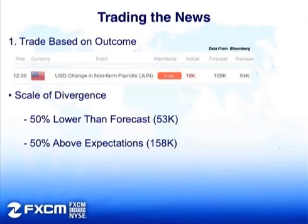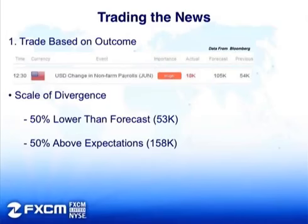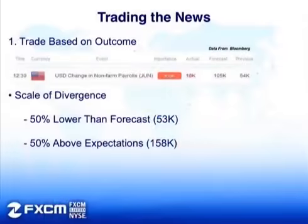Coming back to the non-farm payrolls example for the month of June, we had a print of 18K - essentially very disappointing. This is a very clear example where we see bad data coming out for the U.S. dollar. What I use when I look at these event risks is a scale of divergence - I like to put a 50% scale of divergence to the upside as well as to the downside. If we had a non-farm payrolls print 50% lower than forecast, so a print of around 53K, I would assume that would be very bearish for the U.S. dollar and I'd be looking at selling. Vice versa, if non-farm payrolls came in 50% better than expected at 158K, I would look to buy the dollar.